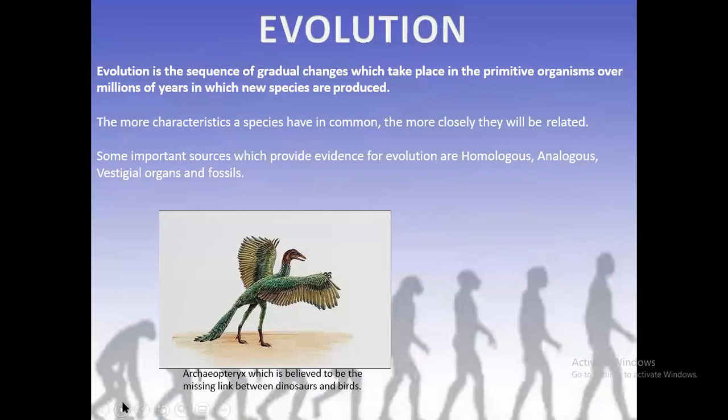Evolution is the sequence of gradual changes which take place in primitive organisms over millions of years, in which new species are produced. The more characteristics a species has in common, the more closely they will be related. Some important sources providing evidence for evolution include homologous organs, analogous organs, vestigial organs, and fossils. Archaeopteryx is an example of a fossil and is the connecting link between birds and reptiles.